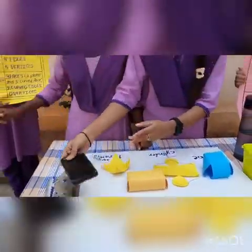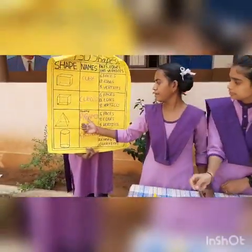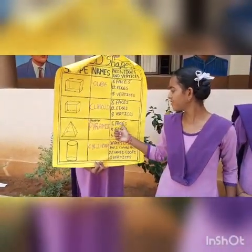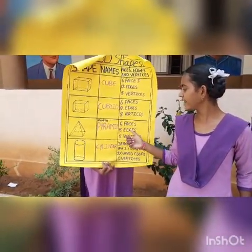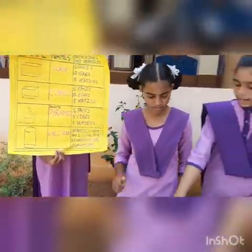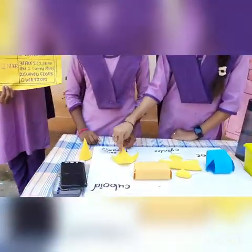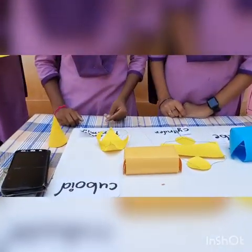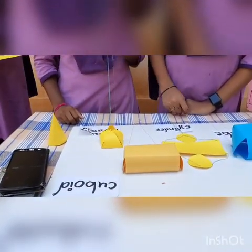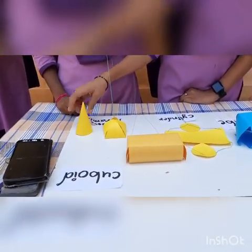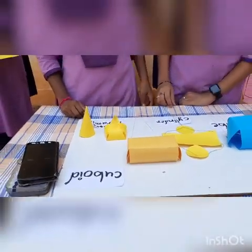And next one is square pyramid. Square pyramid has 5 faces, 8 edges, and 5 vertices. Counting the faces: 1, 2, 3, 4, 5 faces. This is the 3D picture of square pyramid. This is the example for square pyramid.